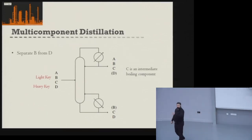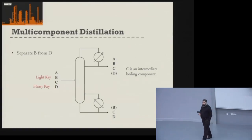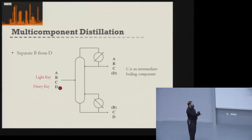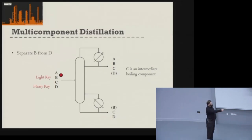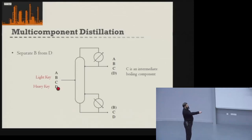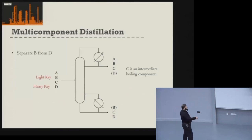As a recap: the components we're separating are called the key components. We write components in order of relative volatility — highest at the top, lowest at the bottom — so lowest boiling point at the top and highest at the bottom. The key component with the highest relative volatility is the light key, and the one with the lowest relative volatility is the heavy key.